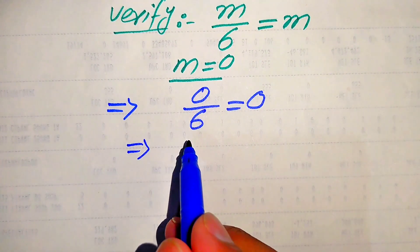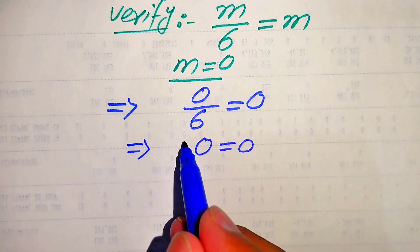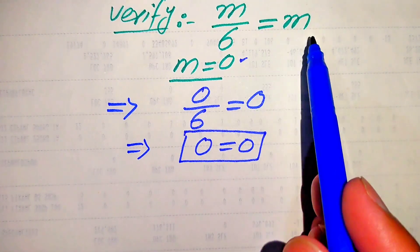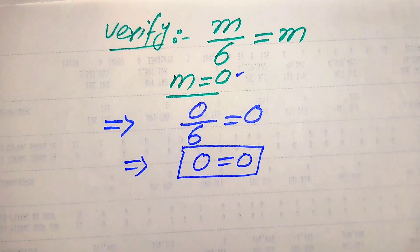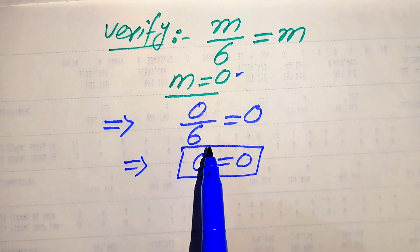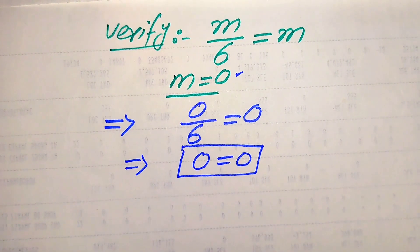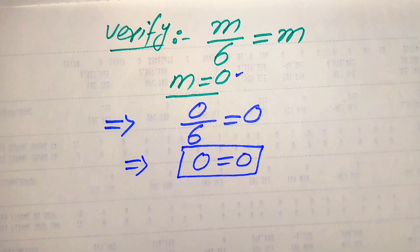We know that 0 over something equals 0. You see here this 0 equals this 0, which shows that the value m equals 0 satisfies the given equation. So m equals 0 is the only solution of the given equation. I hope you liked both of these methods. If you have any other method in mind, please don't hesitate to write it in the comment section. Thank you so much for watching this video; please subscribe to my channel for more exciting videos.